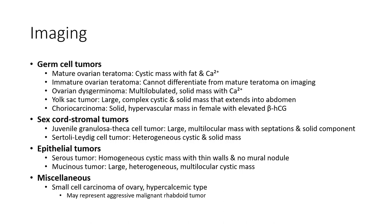Imaging findings: mature ovarian teratoma appears as a cystic mass with fat and calcification. Immature ovarian teratoma cannot be reliably distinguished from mature teratoma on imaging alone. Ovarian dysgerminoma appears as a multiloculated solid mass with calcification.